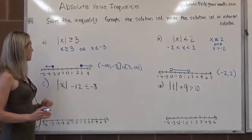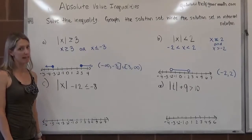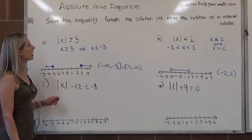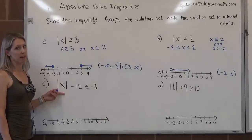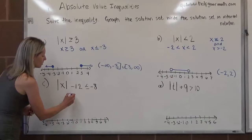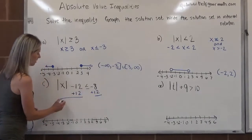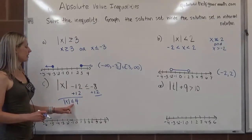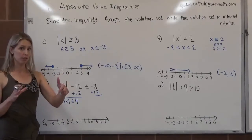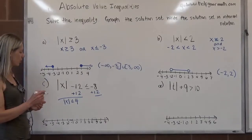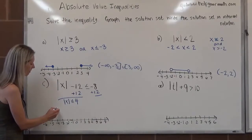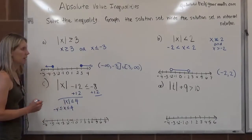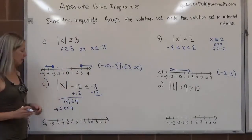Moving on to example C: we have the absolute value of x minus 12 is less than or equal to negative 8. The absolute value is not yet isolated — it's being subtracted by 12. To undo that, we add 12 to both sides. Now we have the absolute value of x is less than or equal to 4. We're looking for numbers closer to 0 than 4, so this is a compound conjunction. We write: negative 4 is less than or equal to x is less than or equal to 4.